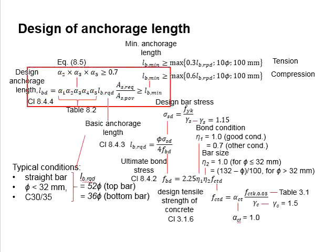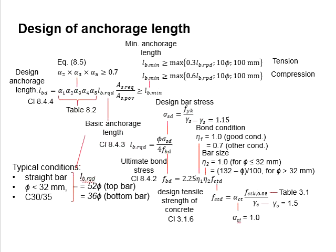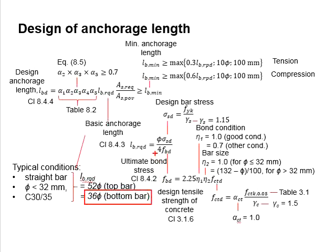The calculation steps can be quite complicated and tedious, so for simplicity, typical conditions can be applied. Under typical conditions where the reinforcing steel is anchored straight, the bar diameter is less than 32 mm, and the concrete grade is equal to 30, the design anchorage length lbd is determined by 52 times the bar diameter or 36 times the bar diameter. The value of 52d represents poor bond conditions, and 36d represents good bond conditions.